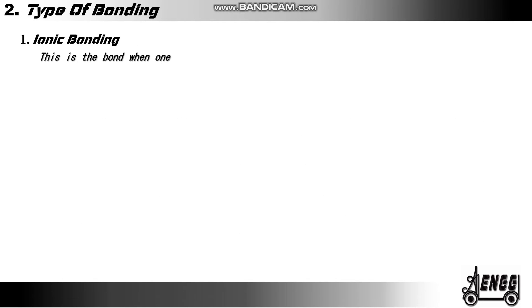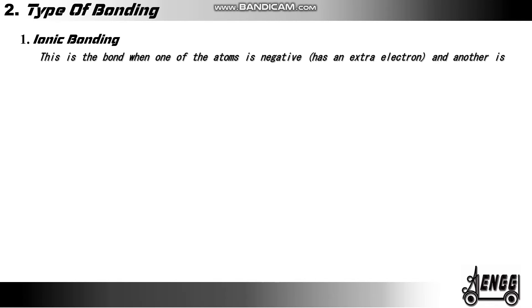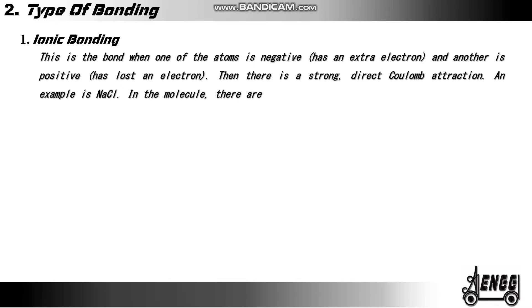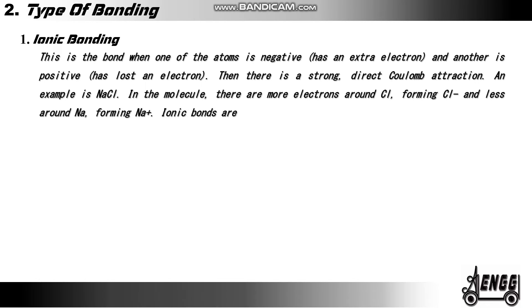Types of bonding. Ionic bonding. This is the bond when one of the atoms is negative having gained an extra electron and another is positive having lost an electron. Then there is a strong direct Coulomb attraction. An example is sodium chloride. In this molecule, there are more electrons around chlorine forming Cl- and less around sodium forming Na+. Ionic bonds are the strongest bonds.